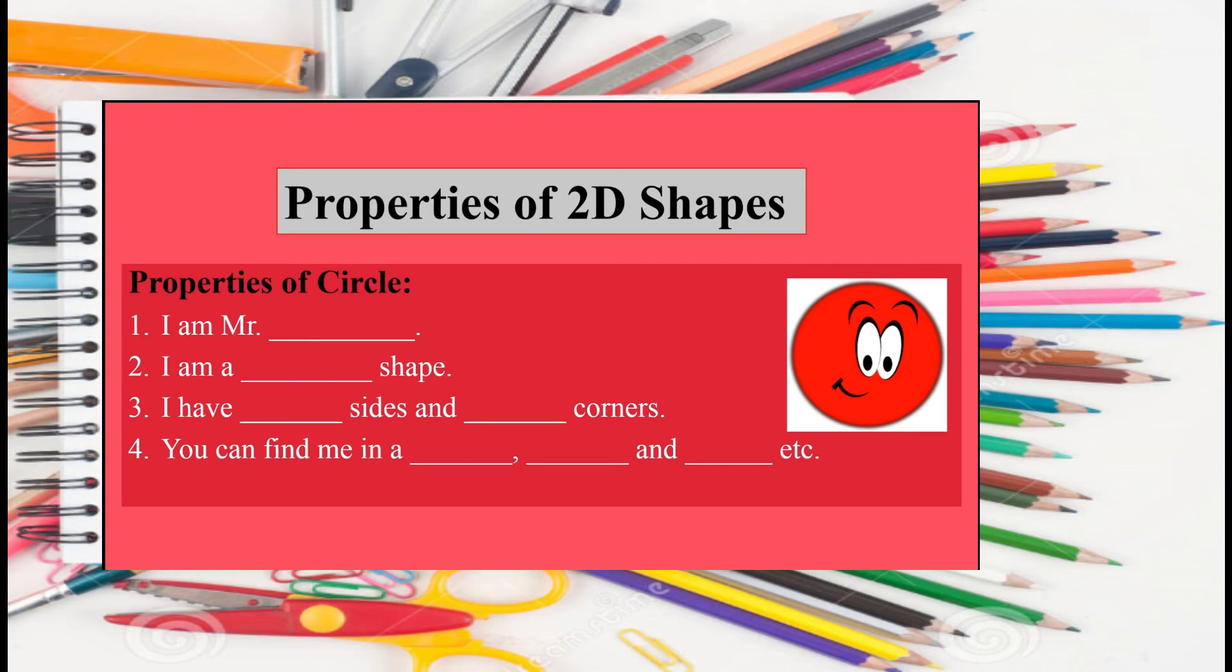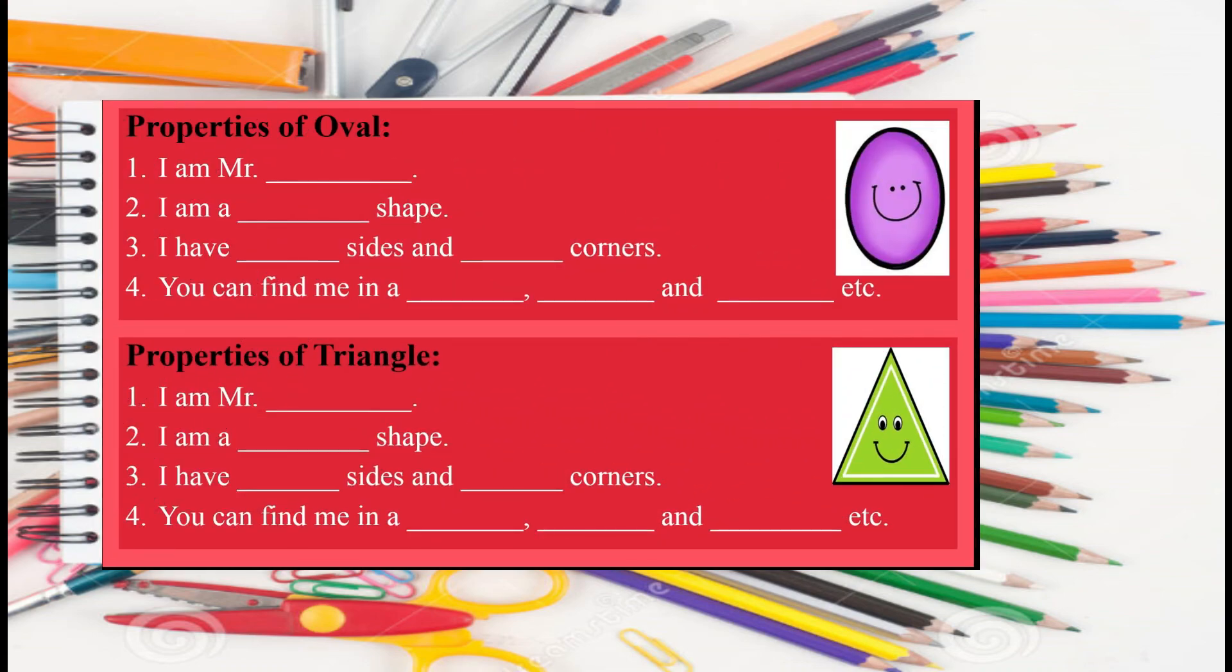Then, fill in the spaces to complete the properties of Circle. After that, you have to draw its picture also. Then, you have to write the properties of Mr. Triangle and Mr. Oval. But remember to do your work in your maths copies and do it in good handwriting also. Right? Best of luck everyone.